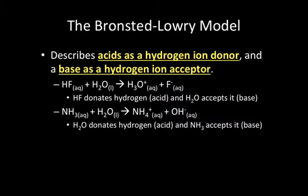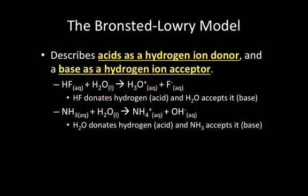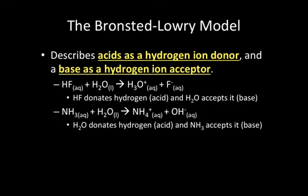The Bronsted-Lowry model describes an acid as a hydrogen ion donor and a base as a hydrogen ion acceptor. Looking at the first equation, HF becomes F- in the products — this tells us that HF donated the hydrogen, making it the acid. H2O in the reactants becomes H3O+ in the products, meaning it accepted the hydrogen and is therefore the base.